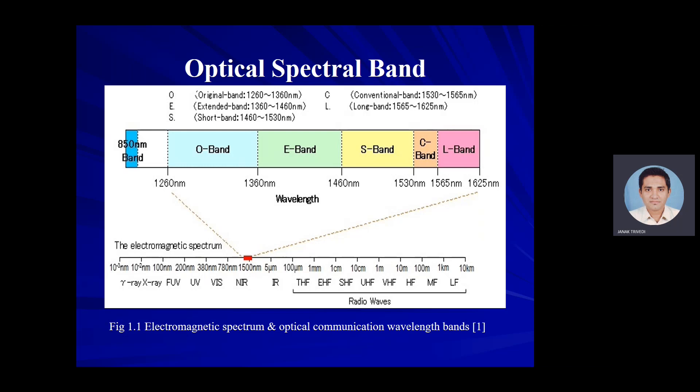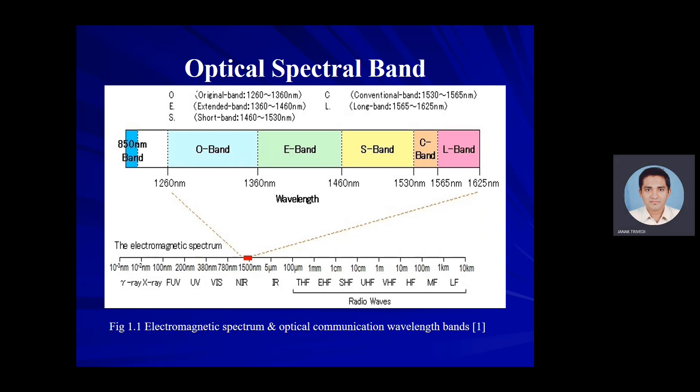Among these five bands, the O band — that is the original band — spans from 1260 to 1360 nanometer. It was historically the first wavelength band used for optical communication because signal distortion due to chromatic dispersion is minimum. It was also because optical fiber produced in the mid-1970s showed its lowest loss in the O band.